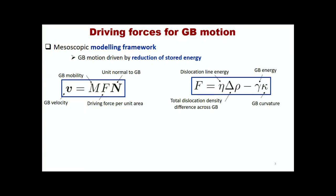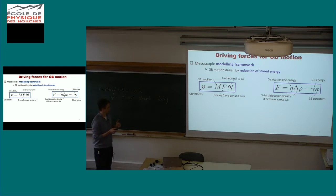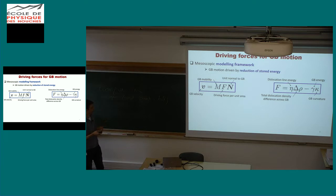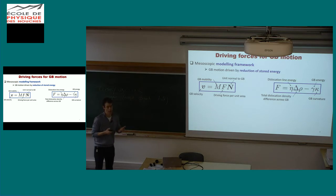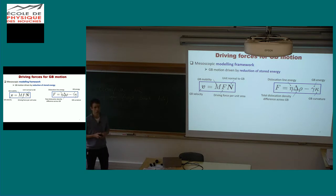In mesoscopic models, as we have seen a lot during this week, the velocity of grain boundaries is a product of mobility and driving force, and generally the misorientation dependence comes from the capillarity term in the grain boundary energy. Today I will talk about the misorientation dependence that we can have in the stored energy term.